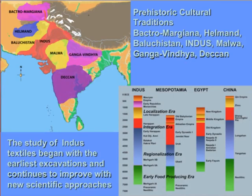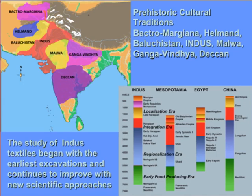The Indus Valley itself is linked to many surrounding regions. The Indus civilization has a very deep chronological root, going back to about 7000 BC during what we call the early food-producing era. The Indus is also surrounded by other regions: the Ganga-India area, the Deccan, the Malwa area, Baluchistan, Helmand, and Bactra-Margiana — all linked to the Indus — as well as Oman across the sea. I'll be talking about these linked regions throughout the talk.